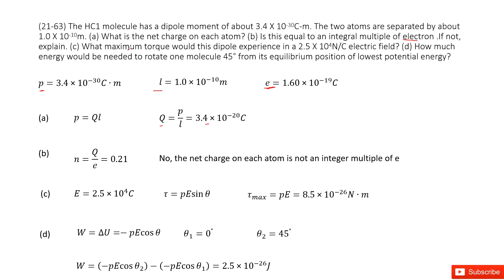The next one asks what maximum torque would this dipole experience in this electric field. We can write down the magnitude for this electric field E as here. To calculate the torque, we use this function: torque equals P momentum times E times sine theta.